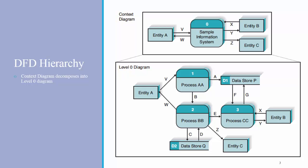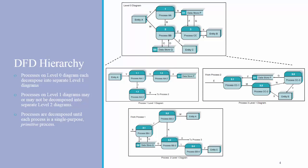This process is continued iteratively. So the processes 1, 2, and 3 in the level 0 diagram can be broken down each into their own level 1 diagram as shown on this slide. Process 1, which is process AA, has been broken down into 1.1, 1.2, and 1.3, and so on for each of the three processes.